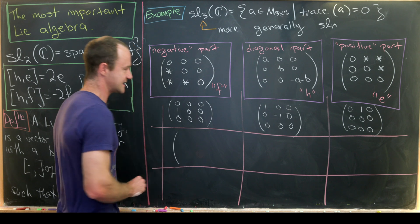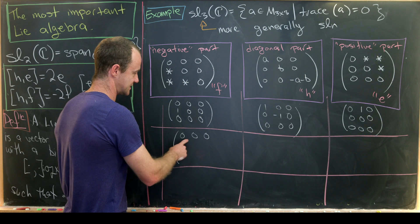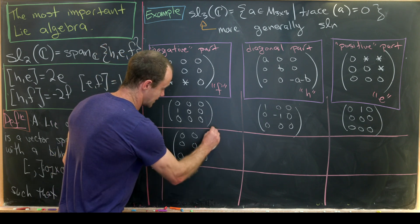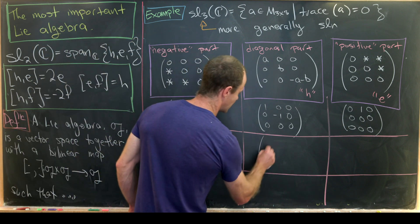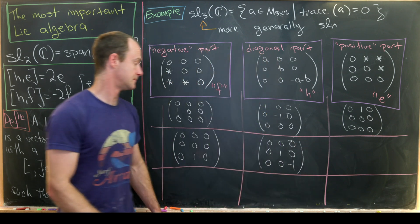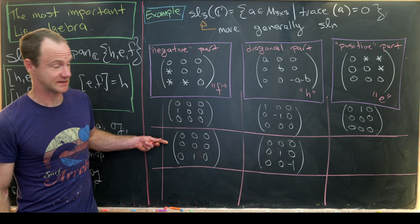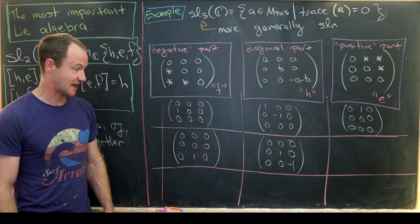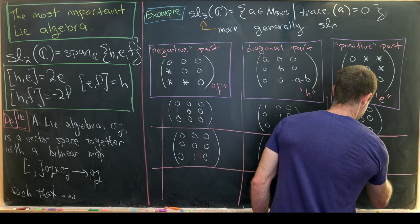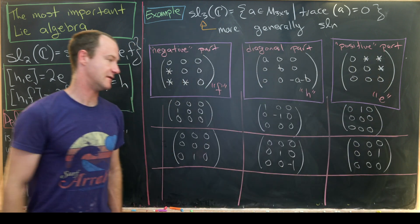The second copy of SL2 is spanned by the following matrices: f is the matrix with a 1 in position (3,2) and zeros elsewhere; h is diag(0,1,−1); and e is the matrix with a 1 in position (2,3) and zeros elsewhere.